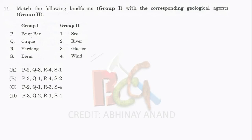Hello everyone, welcome back to our YouTube channel Basic Concepts of Geology. We have already discussed 10 questions from the JAM 2007 question paper. Let's see question number 11. We have a landform in Group 1 and the corresponding geological agent in Group 2. We have to match. Point bar is formed by the river, cirque is formed by the glacier, yardang is formed by the wind, and berm is formed by the sea.